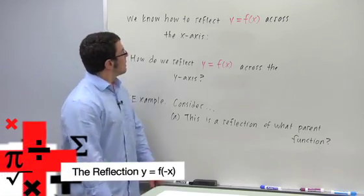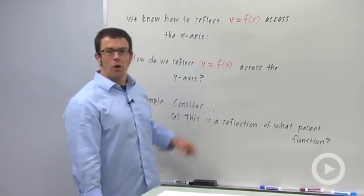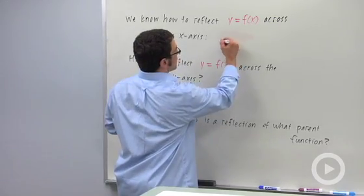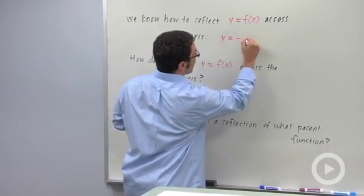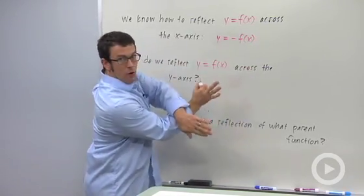Let's talk about reflections. Recall how to reflect the graph y equals f of x across the x-axis. All you have to do is put a minus sign in front of the f of x, right? y equals minus f of x flips the graph across the x-axis.